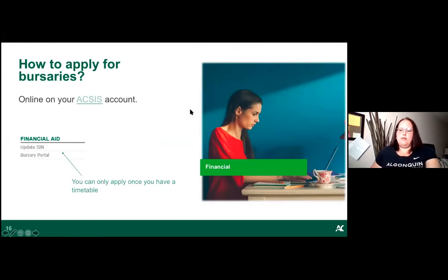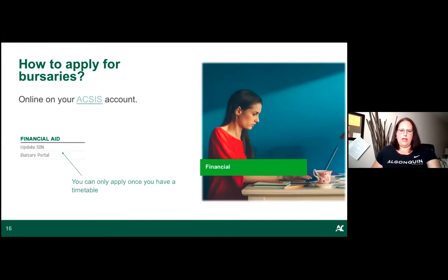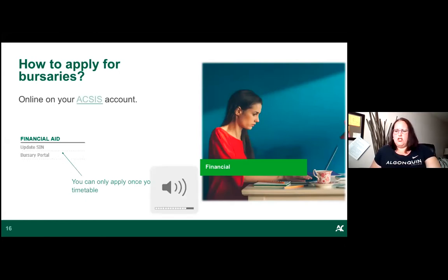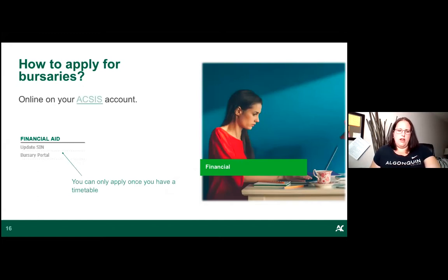To apply for bursaries, go to the bursary portal through your Access account. It takes about 10 minutes and submits you for all available bursaries at once. Bursaries and awards are given out every semester, so you must apply each term. For the fall semester, the bursary portal opens August 24th and closes October 5th.